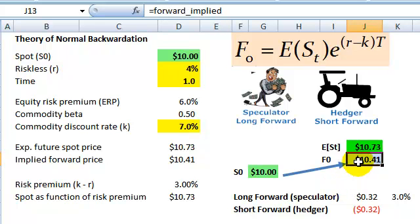And you'll notice my numbers here, they're not the same. My numbers reflect here a theory of normal backwardation where the forward price is lower than the expected future spot price. Why would that be? Well, let me look at my assumptions real briefly.